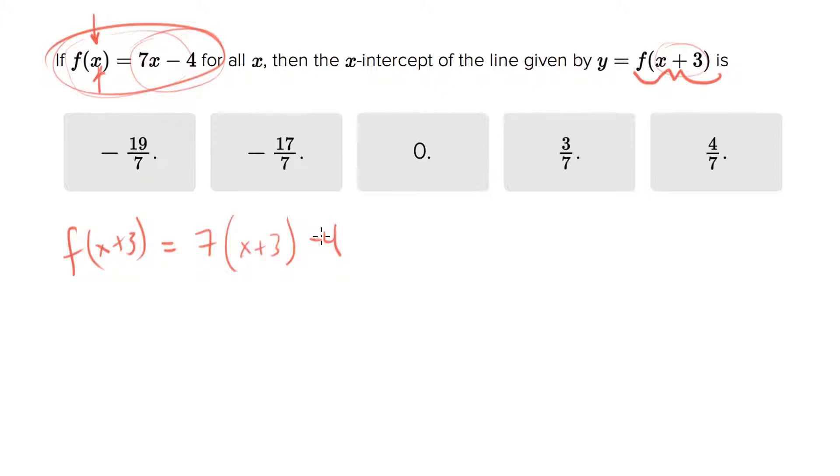They're saying that is a line. What is the x-intercept of that line? They also tell you this equals y, so they're thinking of an x, y coordinate plane line. When they say x-intercept, they want the point where y is equal to 0.